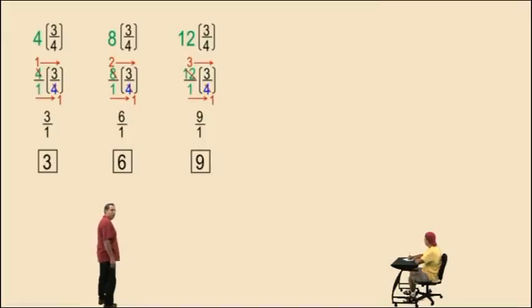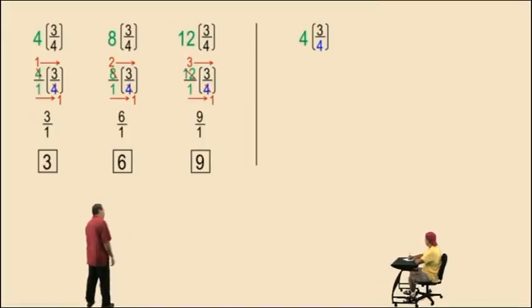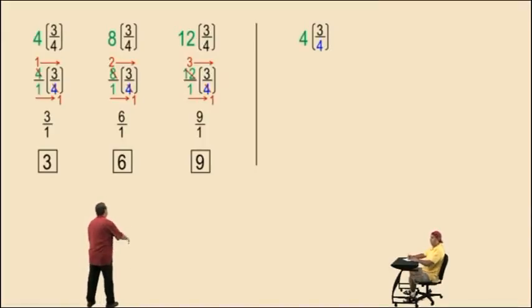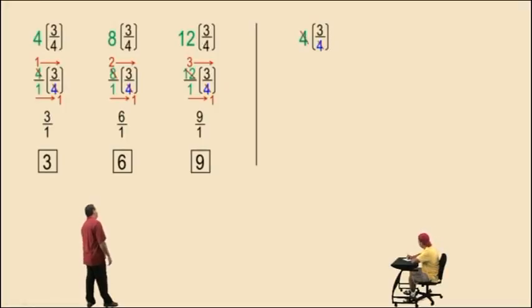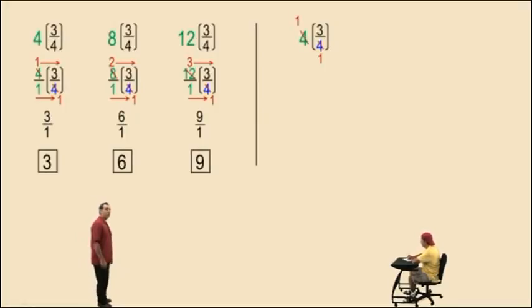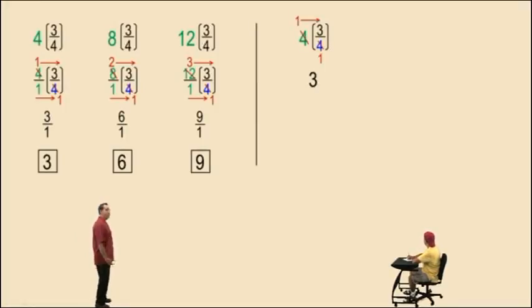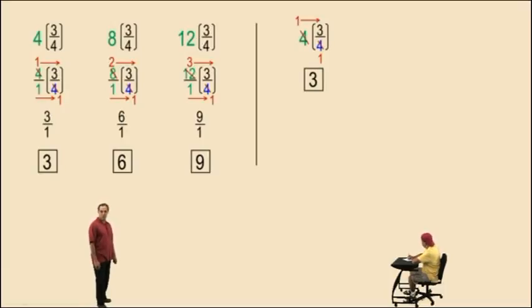Let's do some kung fu. Here's the kung fu technique, ninja style. We have four times three-fourths. We say the fours cancel out, they become one, and one times three is three — and that's your answer. Kung fu!